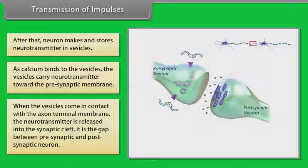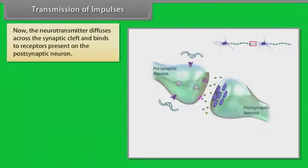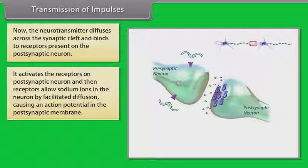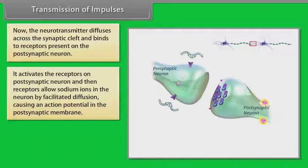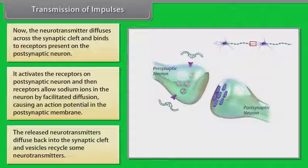When the vesicles come in contact with the axon terminal membrane, the neurotransmitter is released into the synaptic cleft — the gap between the pre-synaptic and post-synaptic neuron. The neurotransmitter diffuses across the synaptic cleft and binds to receptors on the post-synaptic neuron, activating them. The receptors allow sodium ions into the neuron by facilitated diffusion, causing an action potential in the post-synaptic membrane. The released neurotransmitters then diffuse back and vesicles recycle some neurotransmitters.